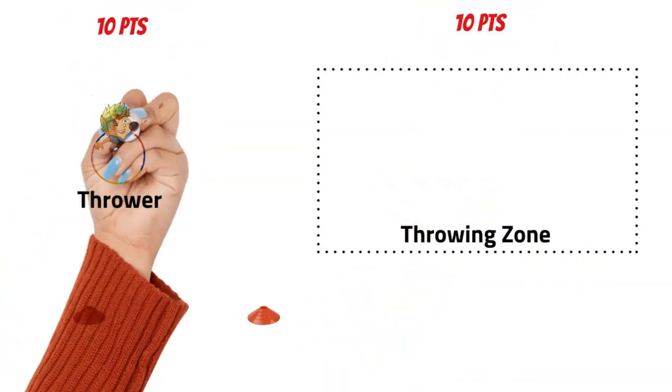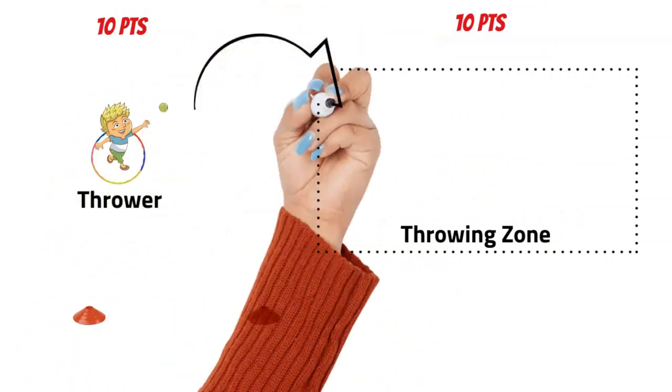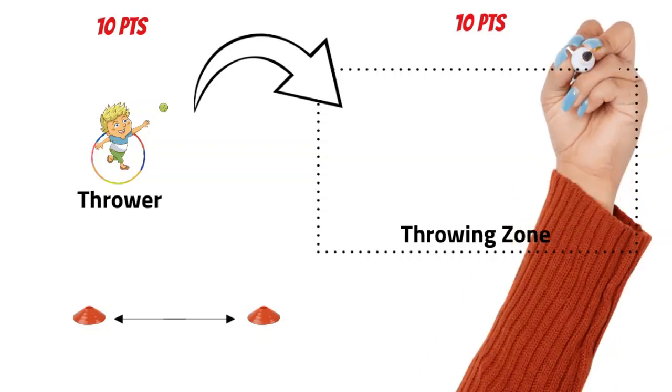Each team starts with 10 points. Throwers take it in turns to launch the ball into the air, but it must land in the designated throwing zone.